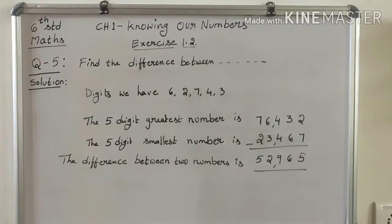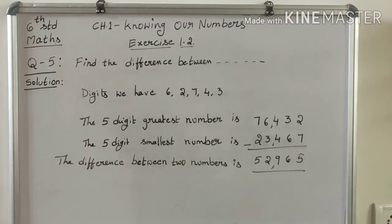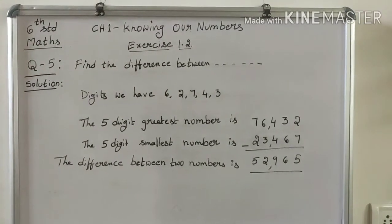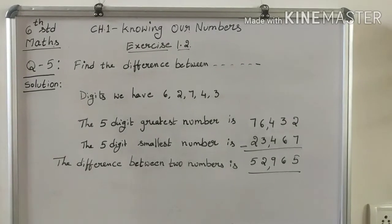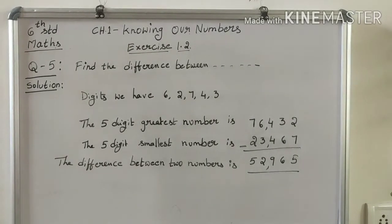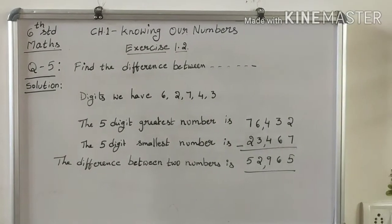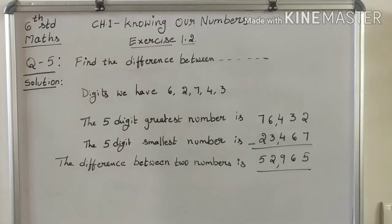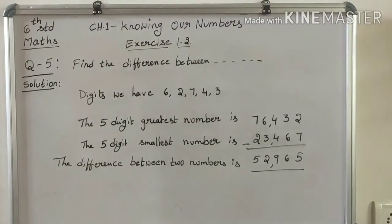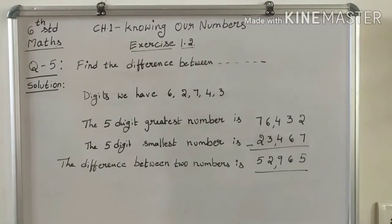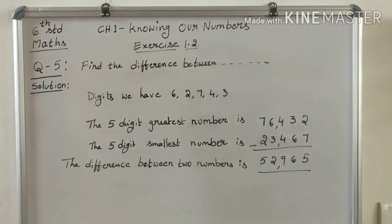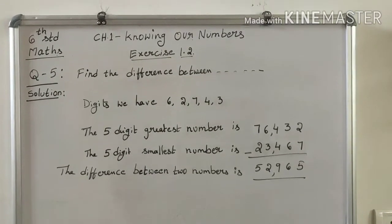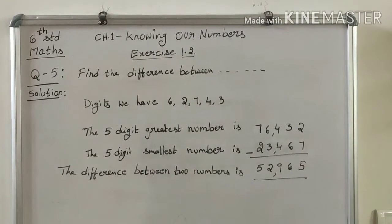First, read the question: Find the difference between the greatest and the least 5-digit number that can be written using the digits 6, 2, 7, 4, 3 — each only once. Here we have 5 different digits.